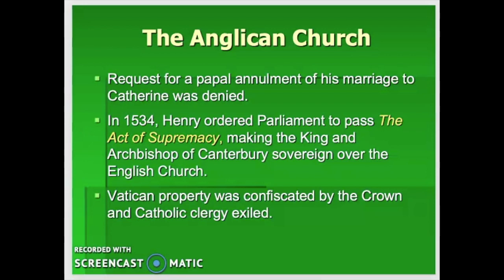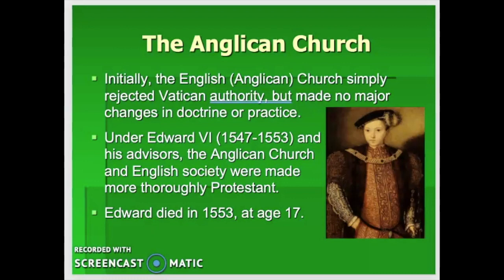A lot of Henry's nobles didn't want to go along with leaving Catholicism. To sweeten the deal so they'd turn Protestant, he distributed confiscated church property to his nobles. If there was a monastery with rich lands, he might give it to a noble so they'd go along with his Protestant leanings. Under Henry, not a lot changed in terms of how the Church did things — it just had different leadership.